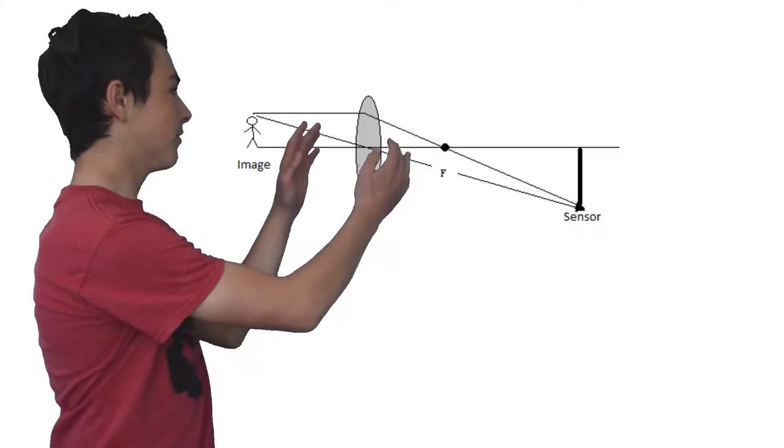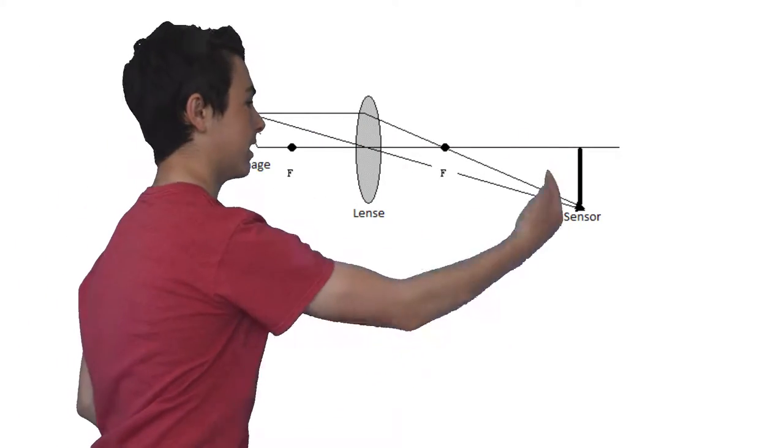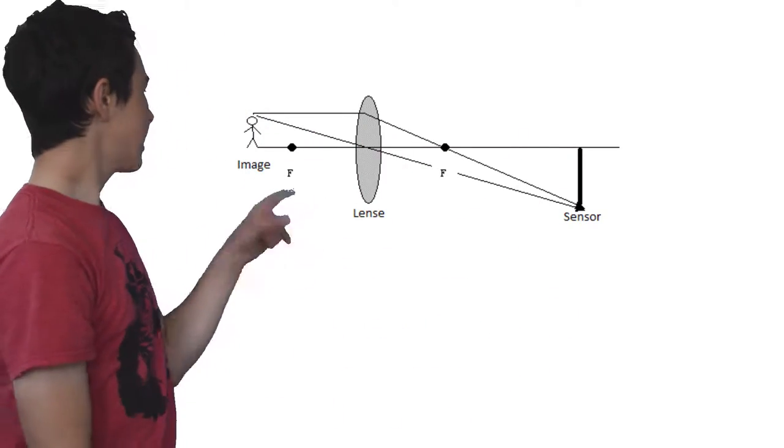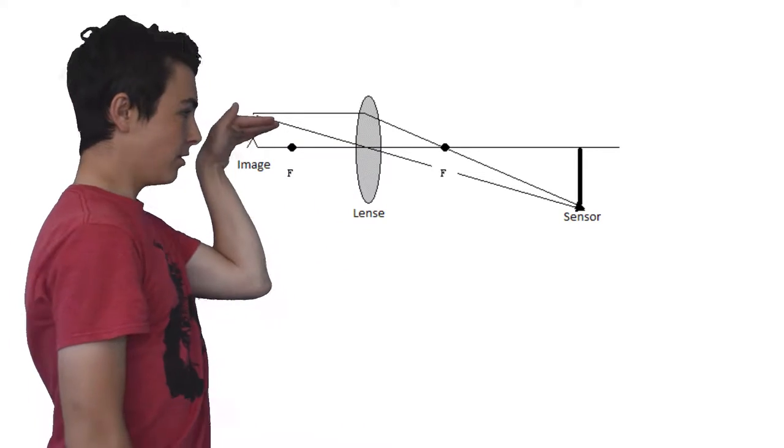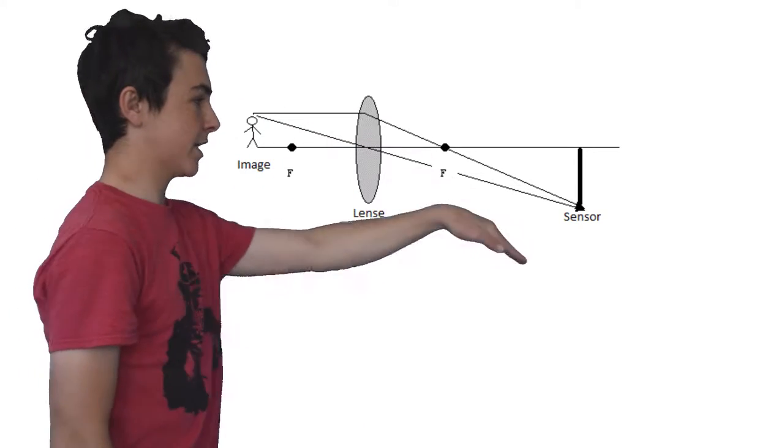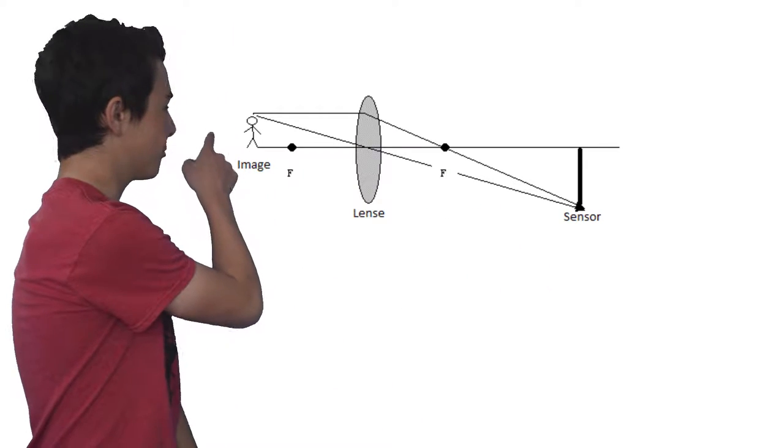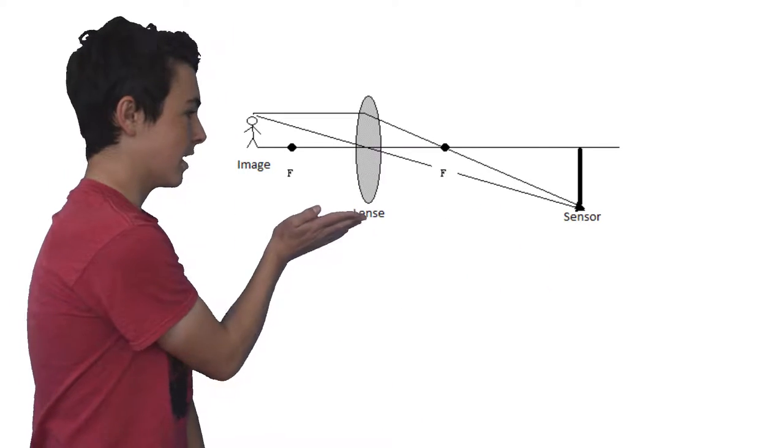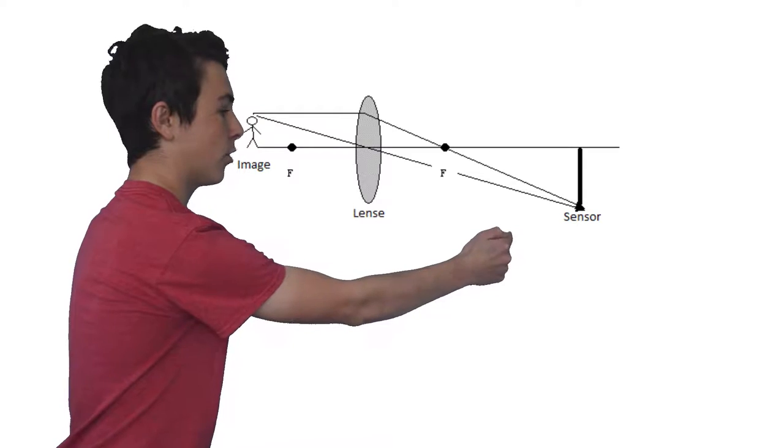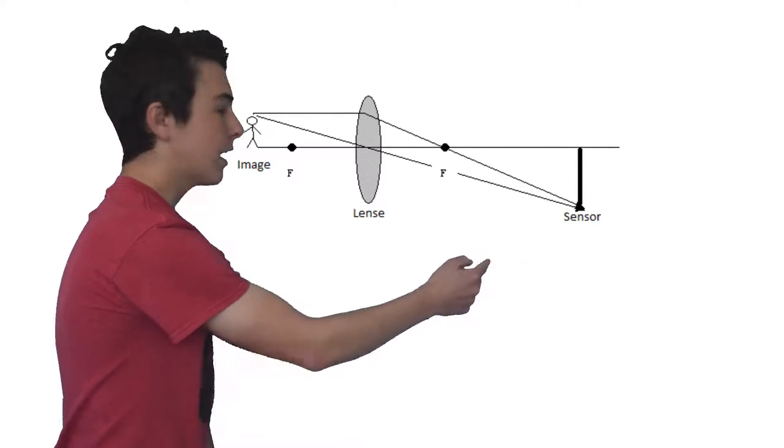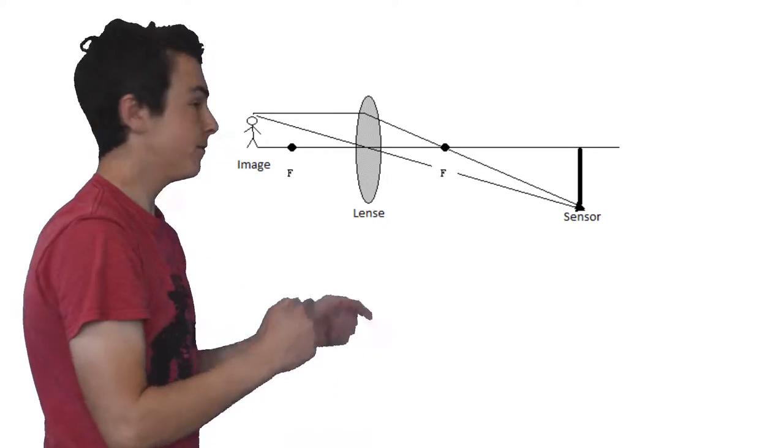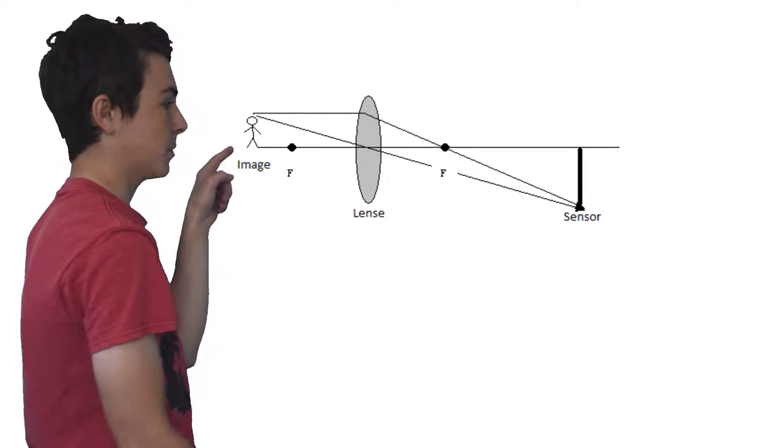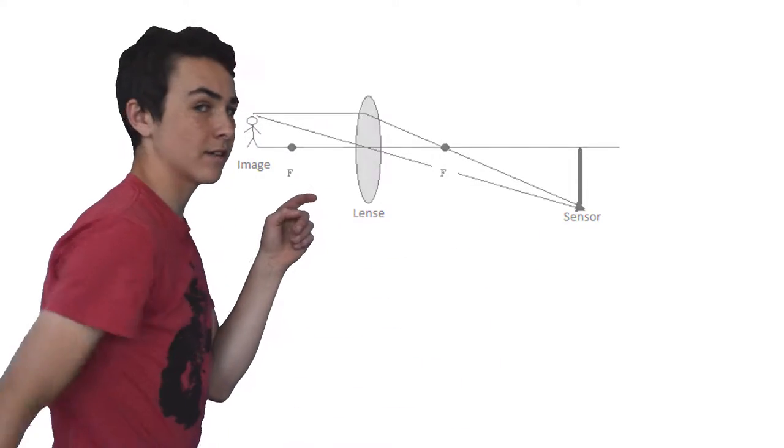A camera forms the image the same way as your eye does. You have a convex lens and a sensor, and the image comes in. A point of light comes in parallel to the lens, and then it's directed into the focus. Another point comes in through the focus and it's directed parallel, and you form that point down here. Since the point starts up here and goes to down here, it's inverted, and then you have a bunch of points coming in and forming an image back over here.